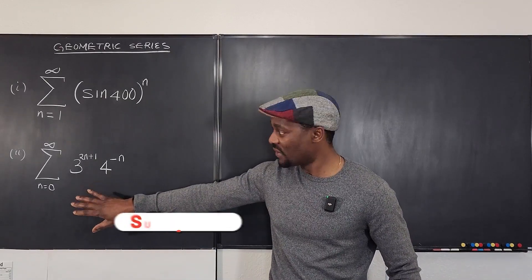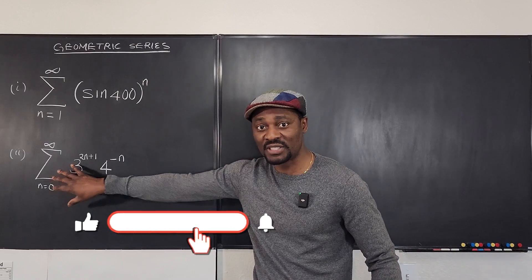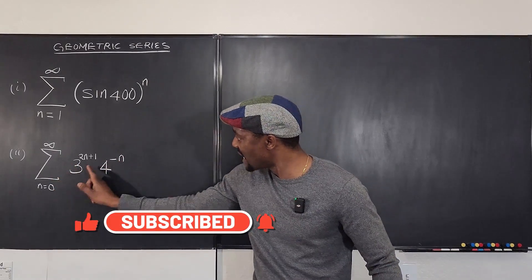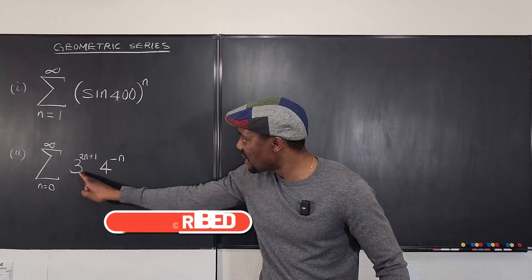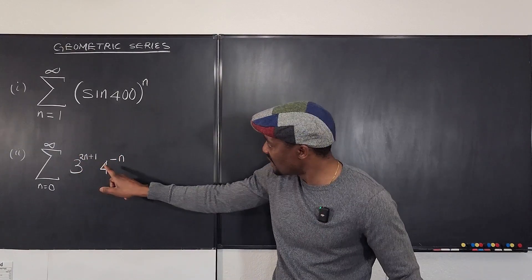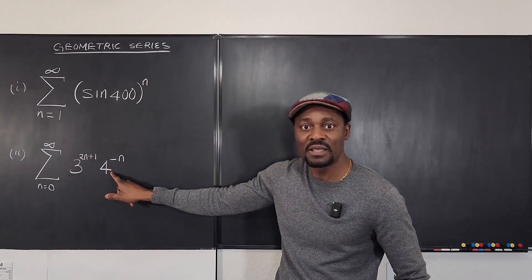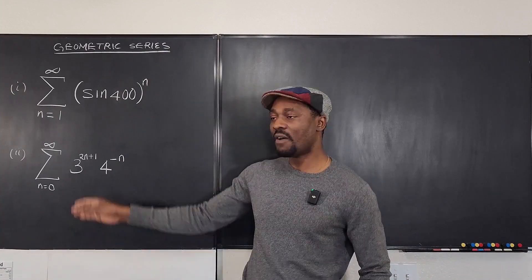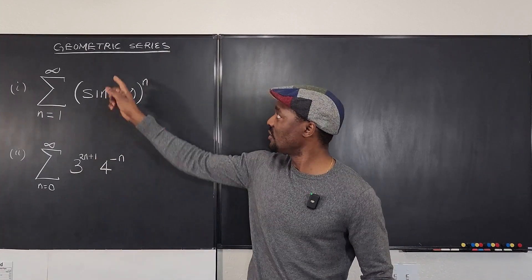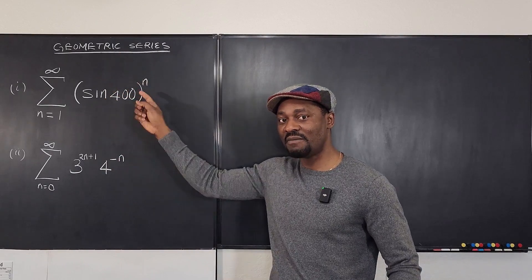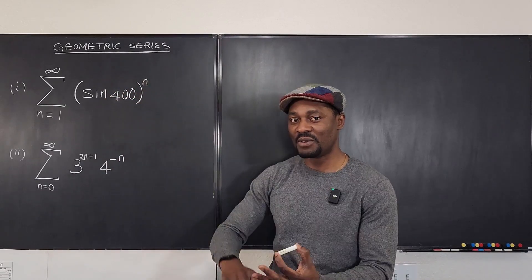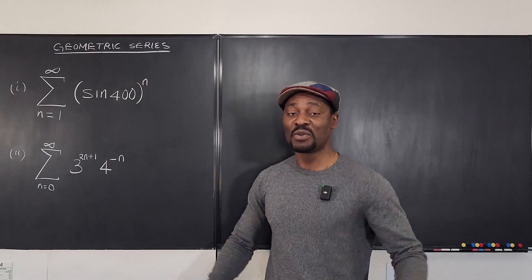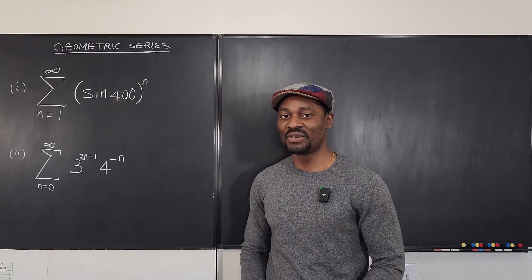The same thing for this one. The reason I know we're going to use the geometric series test for this is because the exponent n is only on top. If there's an n in the base — there's an n in the base here — forget about geometric series. It won't work. So now that we know these two will require us using this test, let's see if either of these converges and what it converges to, or if they both diverge.